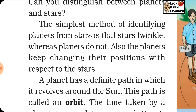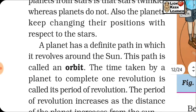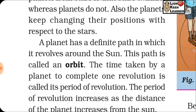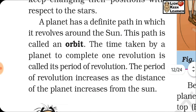A planet has a definite path in which it revolves around the sun. This path is called its orbit — in Hindi, 'kaksha.' A planet revolves along this fixed path around the sun.